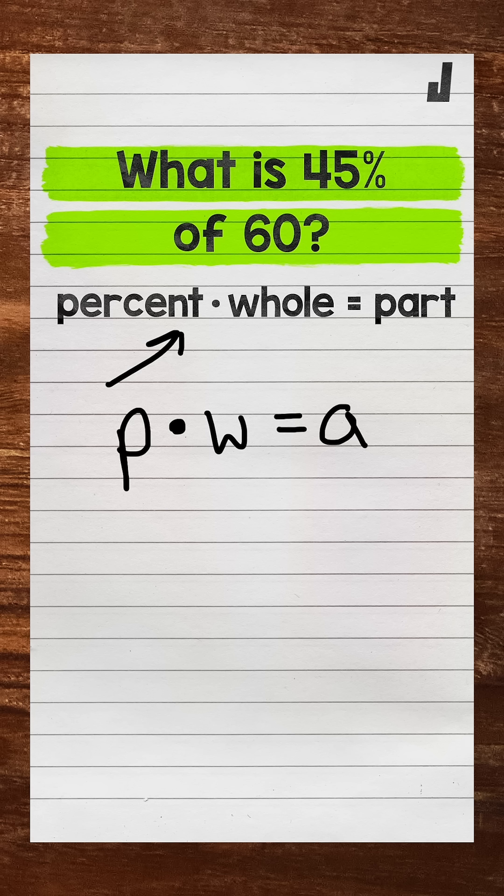We're going to start with our percent, which we're going to write as a decimal. That makes it easier to work with within our equation. All we need to do is divide our percent by 100 to convert it to a decimal. A quick way to do that is move the decimal twice to the left.